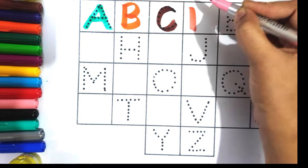Black color Q, Q for queen. Purple color R, R for rabbit.